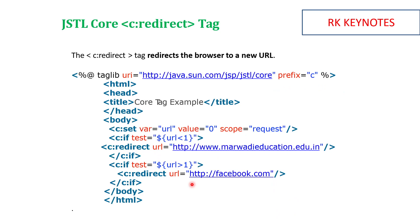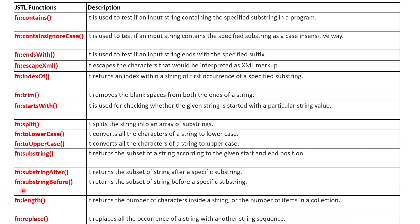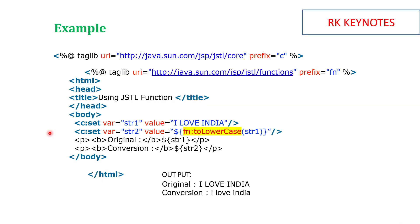Now for function tags — most of them are for string manipulations. In core Java we already discussed string methods like toLowerCase, toUpperCase, substring, trim, and many others. Similarly here you can replace a character, use length to find string length, substring before and after, lowercase, uppercase, split, trim, endsWith, contains, and more. To implement function tags use the same taglib directive but specify 'functions' in the URI and 'fn' as the prefix. You can also mix multiple tag libraries — core, function, and XML tags — by importing each with a separate taglib directive.